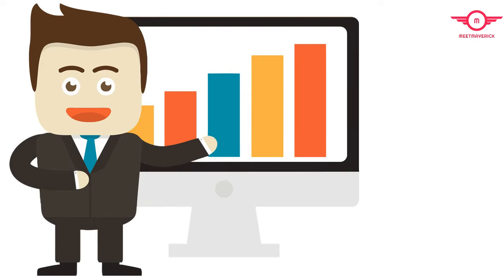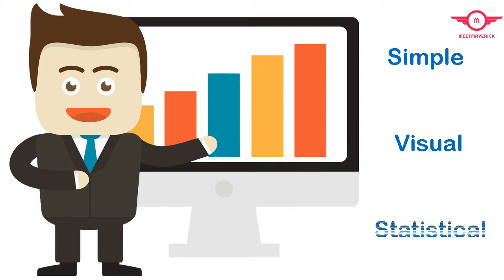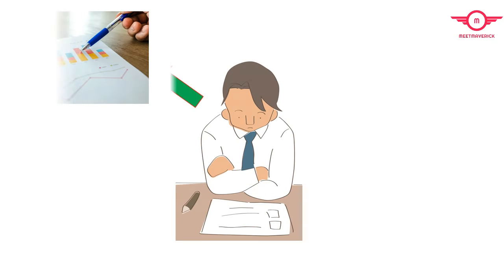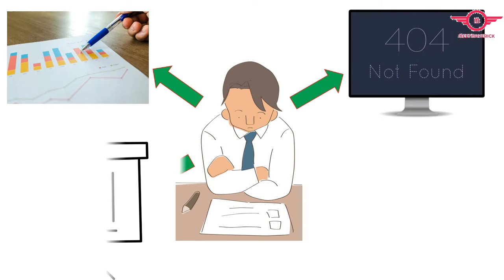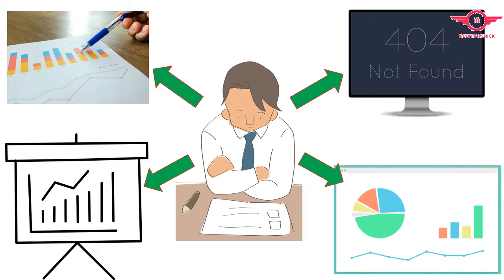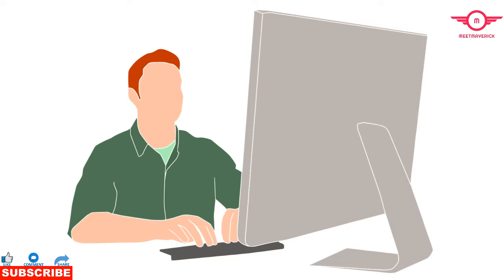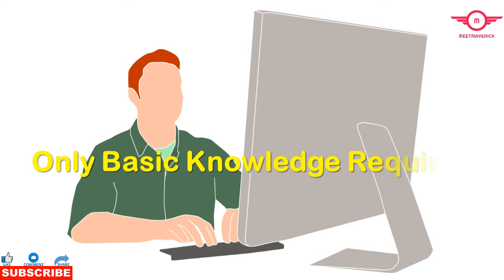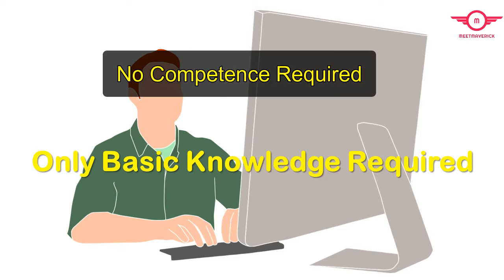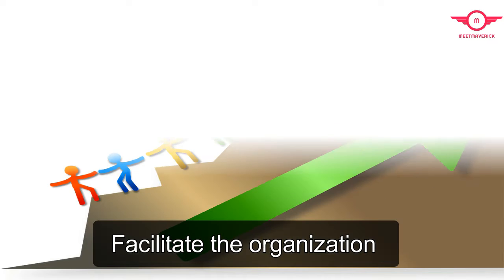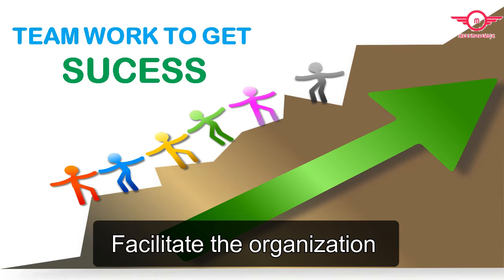The QC tools are simple, visual, and statistical tools used for problem solving. These tools are used to analyze processes, identify major issues, control variation in quality, and guide organizations to prevent producing defects in the future. These tools can be used by any person with very basic training to solve problems in their quality work. They do not require complicated graphical or statistical competence, and they facilitate the organization to solve basic problems in their processes.